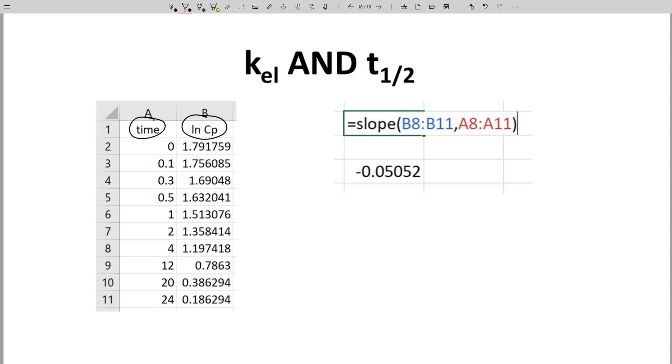Avoid the distribution phase points and use the slope function in a spreadsheet to determine the slope of the line.